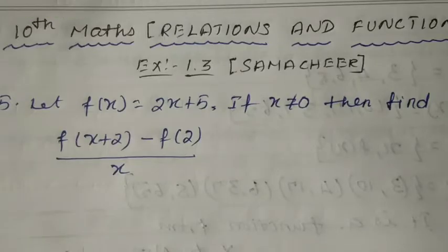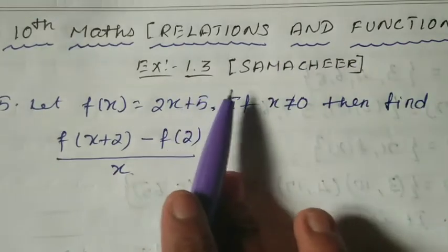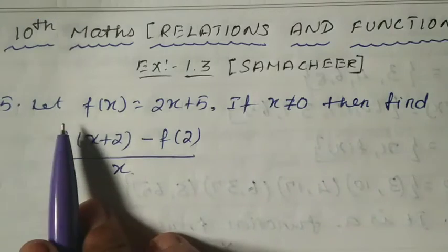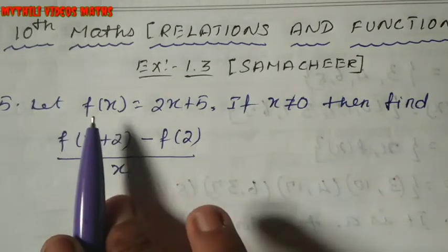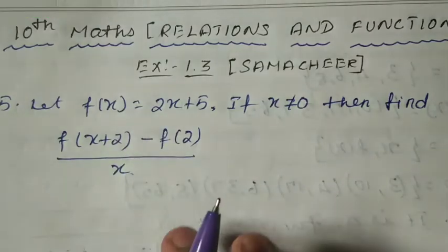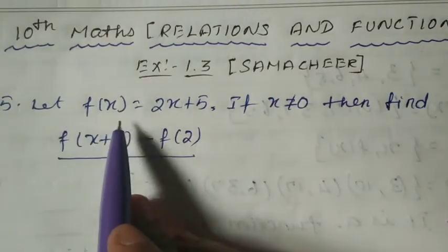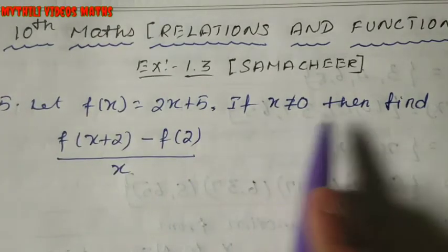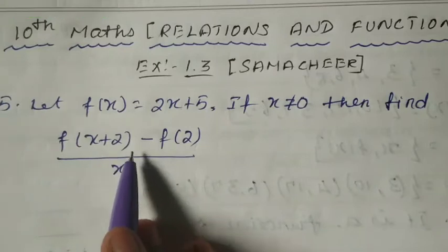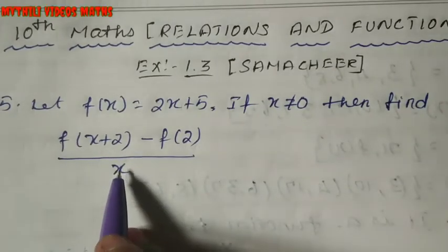Hi students, this is 10th standard Maths. I am Maithili. This is Relations and Functions, the first chapter. This is exercise 1.3, 5th sum. We have already completed 4 sums. Now we have to do the 5th sum. It's a very important sum. Let f(x) = 2x + 5. If x is not equal to 0, then find f(x+2) minus f(2) divided by x.